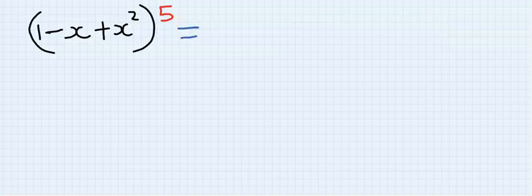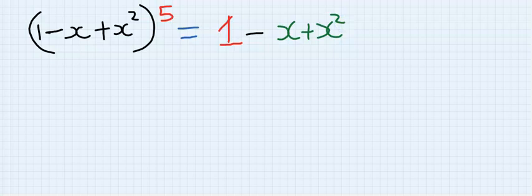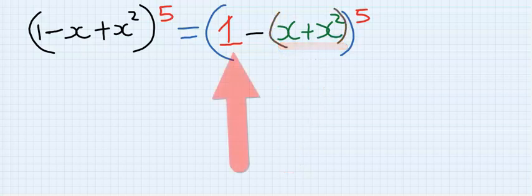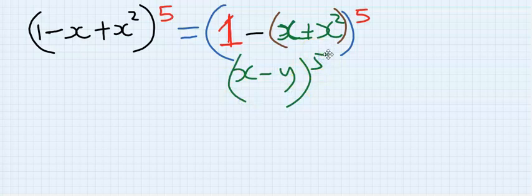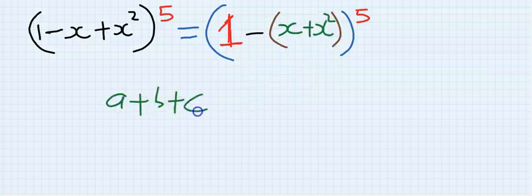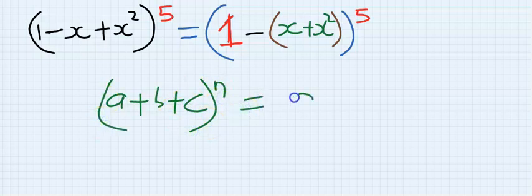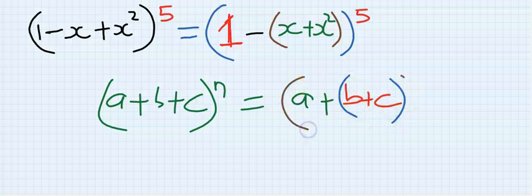We are giving this to expand using the binomial theorem. First, we rearrange before doing anything. Here we have x plus x squared in a bracket to the power of five. These two go together, so this is our 'a' and everything here is our 'y', making it like x minus y to the power of five. If you have a plus b plus c to the power of n in binomial expansion, it is written as a plus b plus c, all to the power of n.